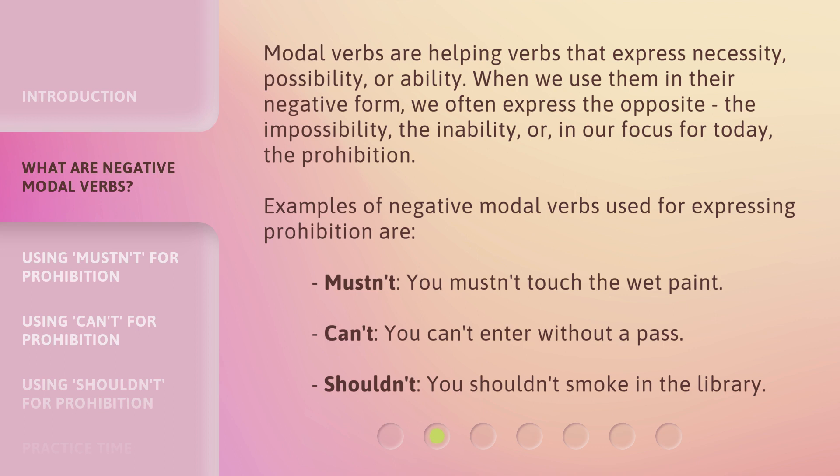Examples of negative modal verbs used for expressing prohibition are: 'mustn't' — you mustn't touch the wet paint; 'can't' — you can't enter without a pass; and 'shouldn't' — you shouldn't smoke in the library.